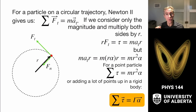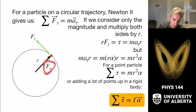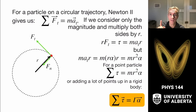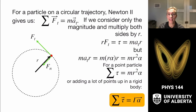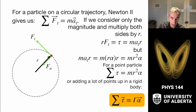Torques create angular accelerations. Imagine a particle on a circular trajectory held by a force providing centripetal acceleration v²/r. The tangential component is what accelerates it. The torque from the normal-direction force is zero, so we only consider the torque from the tangential-direction force.